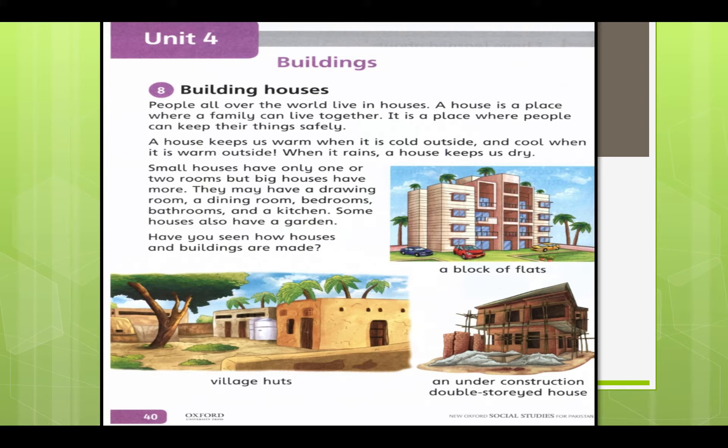When it rains, a house keeps us dry. We need a house to live in because it gives us shelter — it protects us from heat, cold, and rain. It also protects us from wild animals and protects us from thieves.